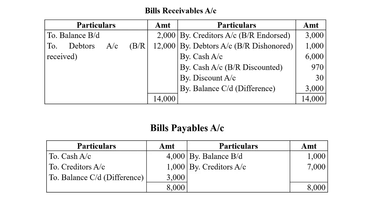Bills receivable discounted — by bank account — discounting charges 30 rupees, so net amount 970 rupees entered. The balance carried down is the closing bills receivable. Debit side total is 14,000 rupees; after posting credit side entries, the difference of 3,000 rupees is the closing balance of bills receivable, entered as balance carried down.